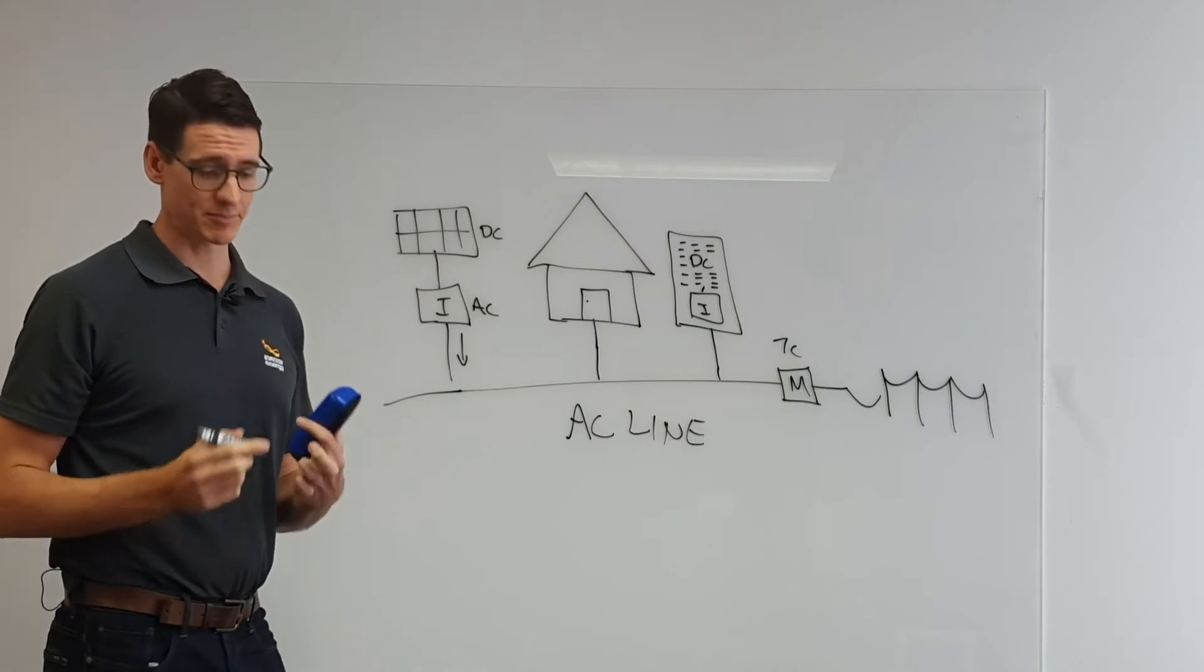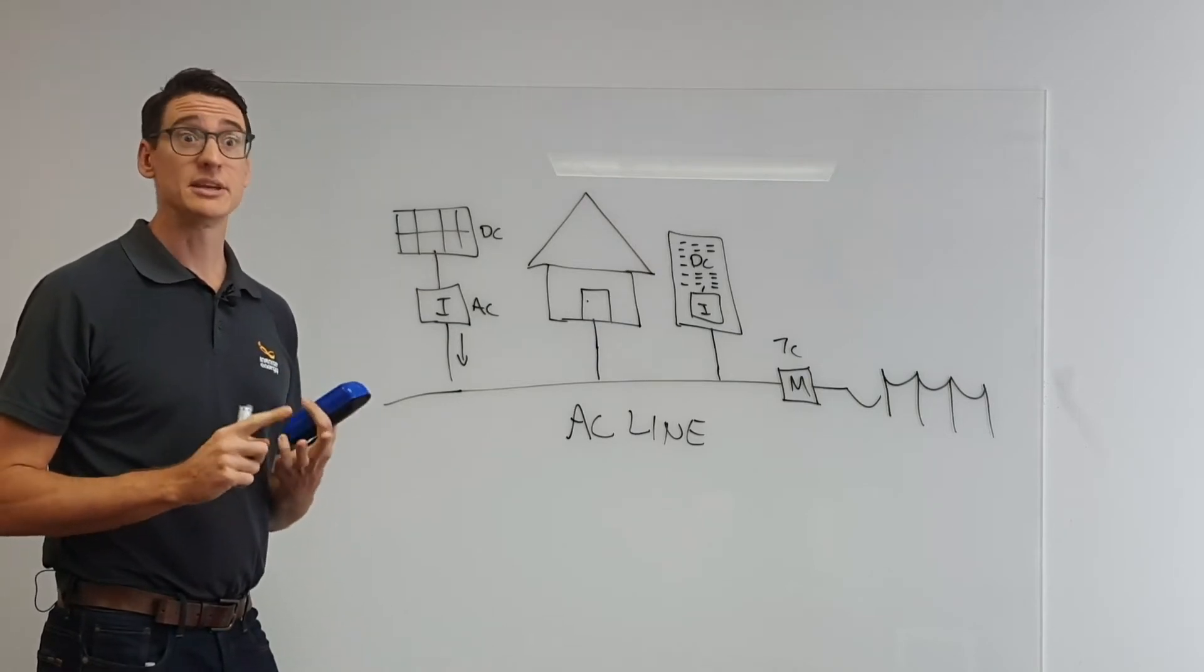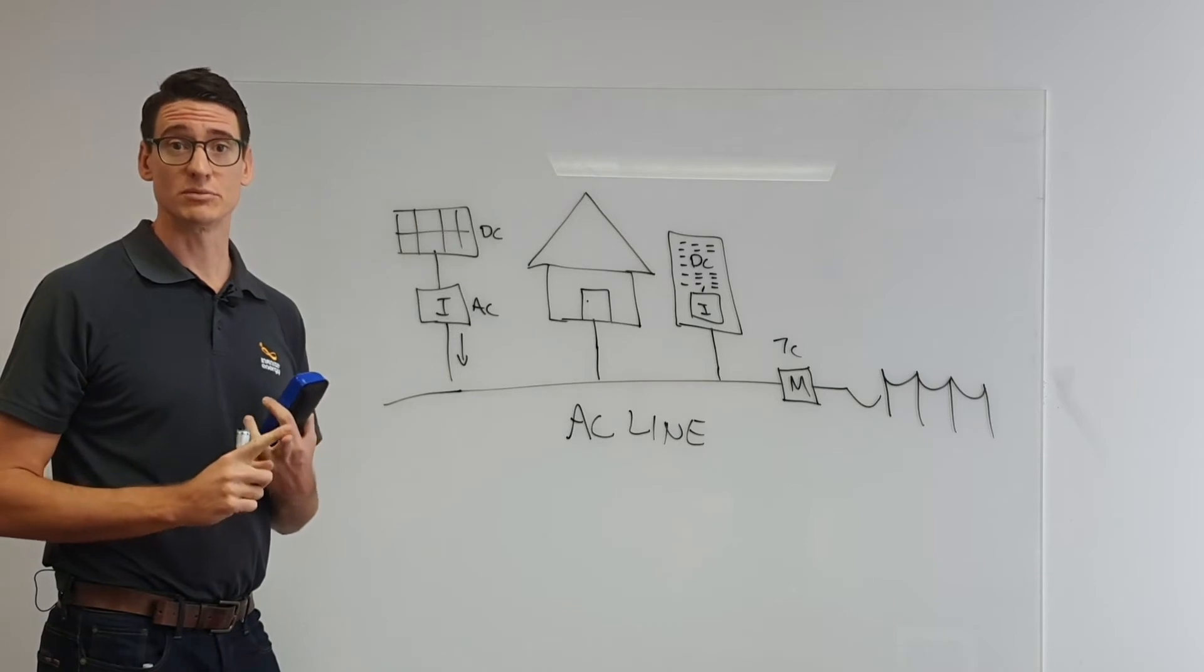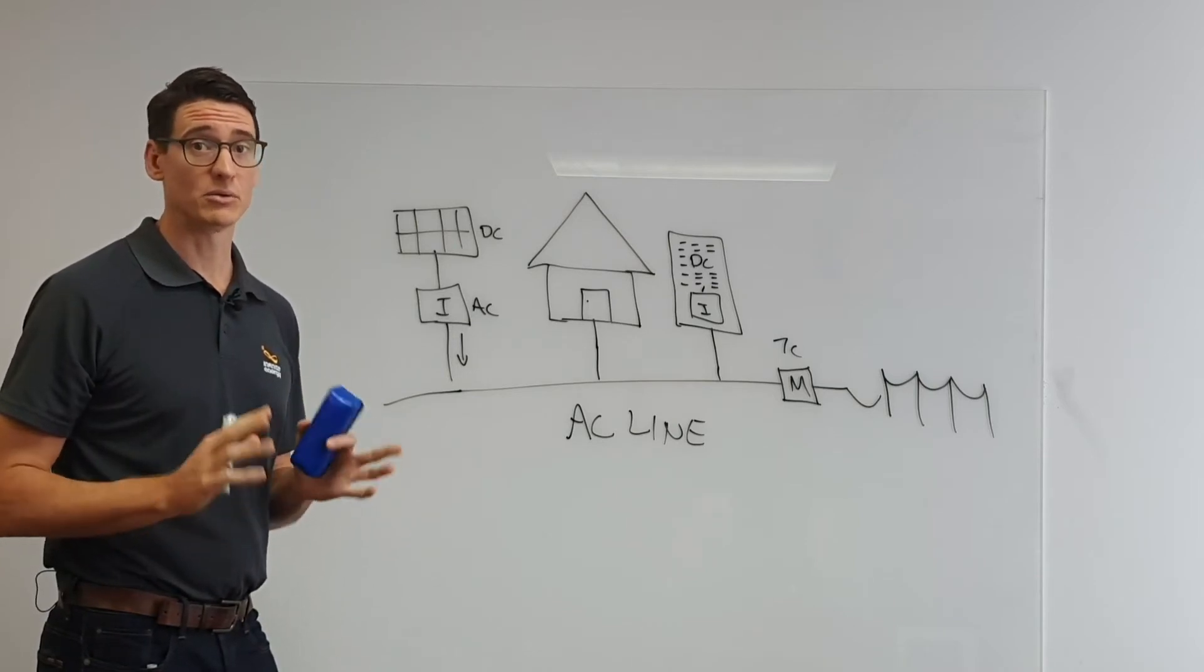Examples of AC couple batteries might be your Tesla Powerwall 2, the Senec V2, and a few of the Sonnen models as well. Quite popular out there, all great products.